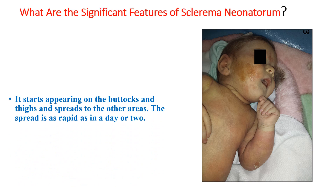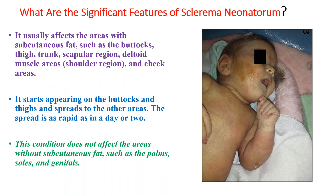Regarding the significant features of sclerema neonatorum: this problem usually affects areas with subcutaneous fat such as the buttocks, thighs, trunk, scapular region, deltoid muscles, and the cheek areas. It starts appearing on the buttocks and thighs and spreads to other areas, with spread as rapid as a day or two. This condition does not affect areas without subcutaneous fat, such as the palms, soles, and the genitals.